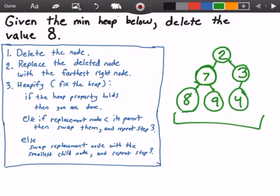First thing we want to do is delete the node that contains the value 8. Then we want to replace the deleted node with the farthest right node, which is the node that's furthest down and furthest to the right. That's the node that contains the value 4.